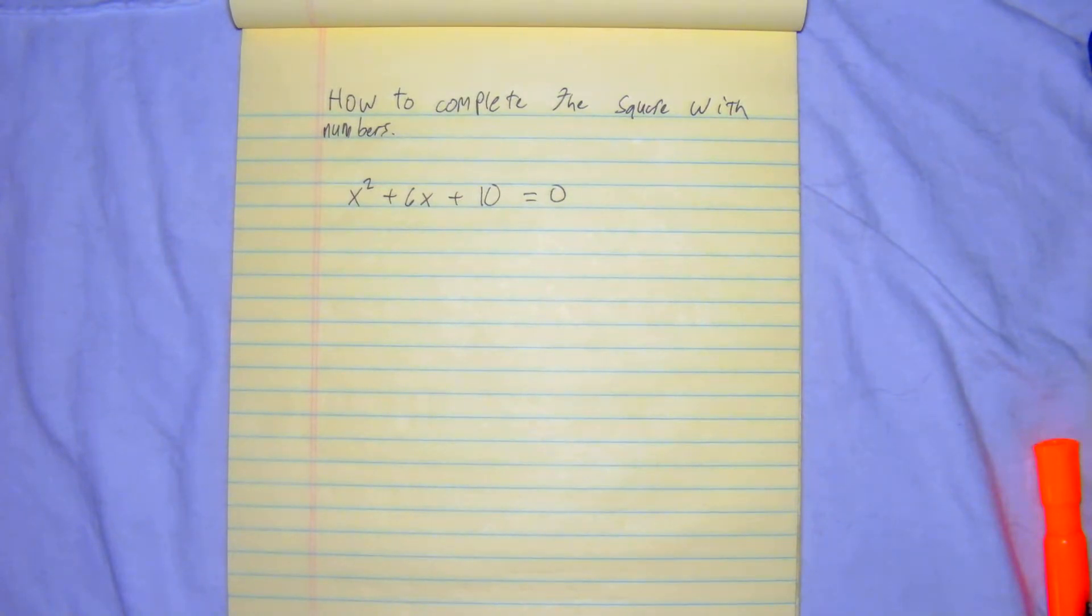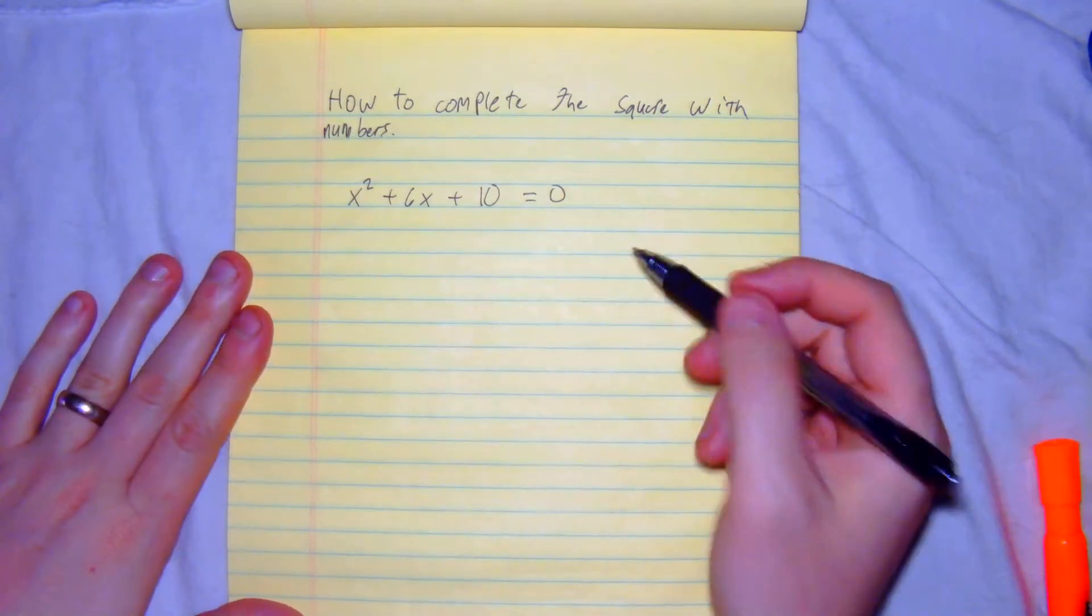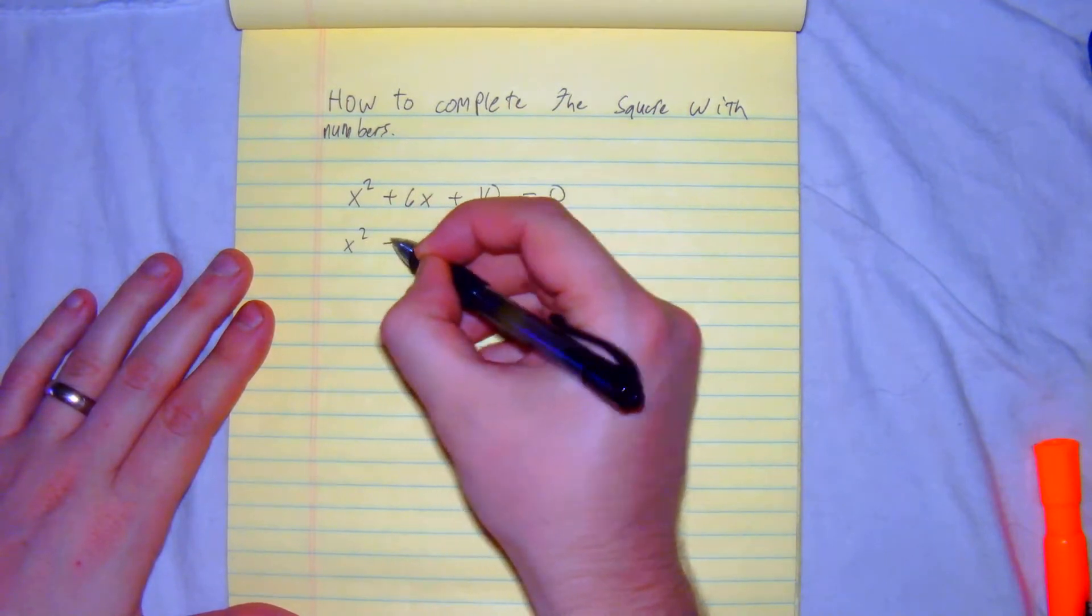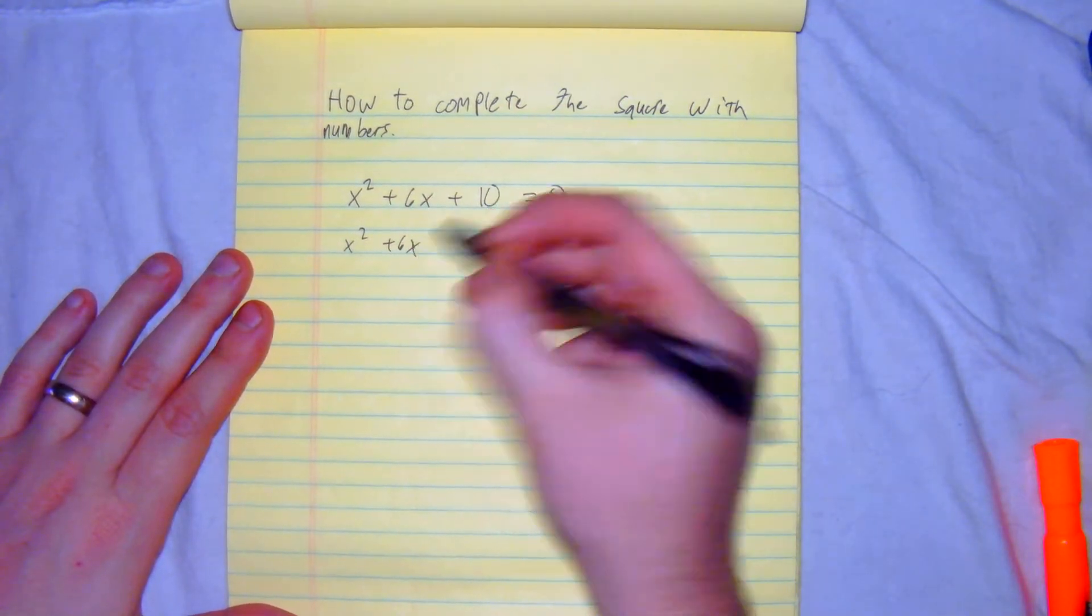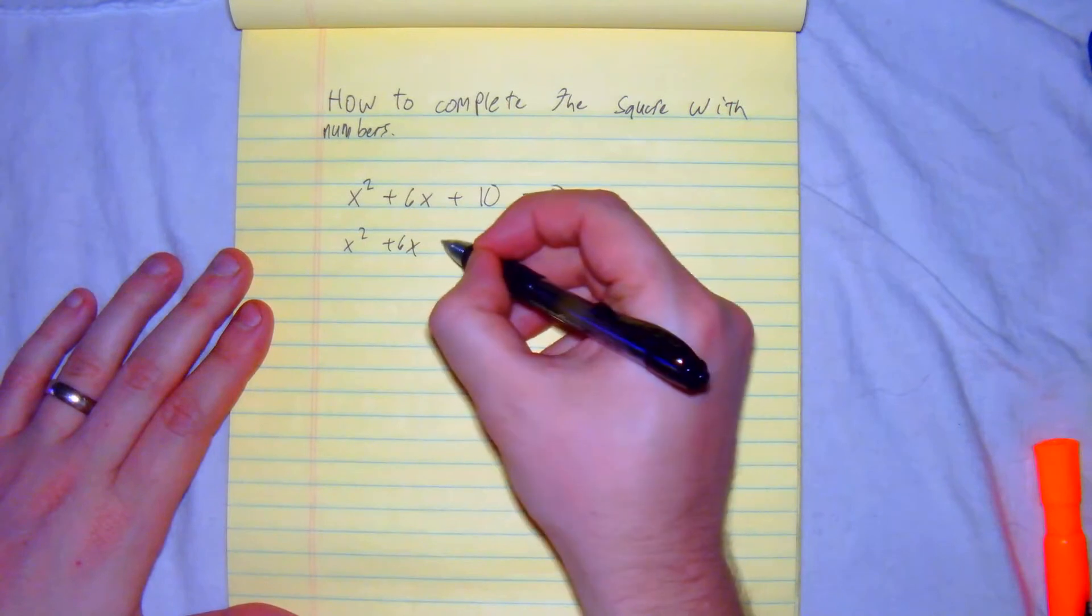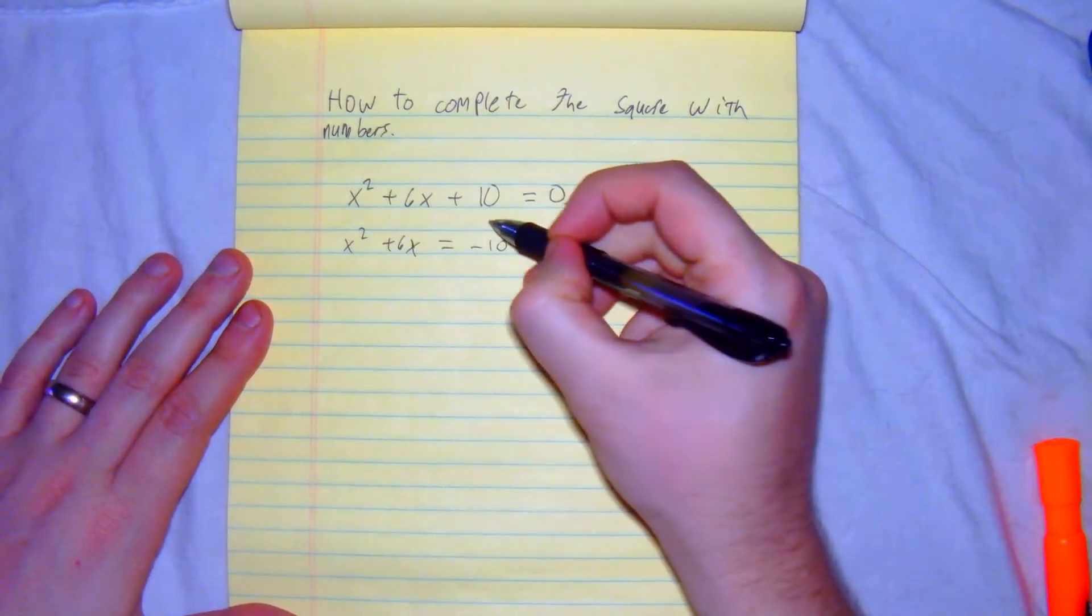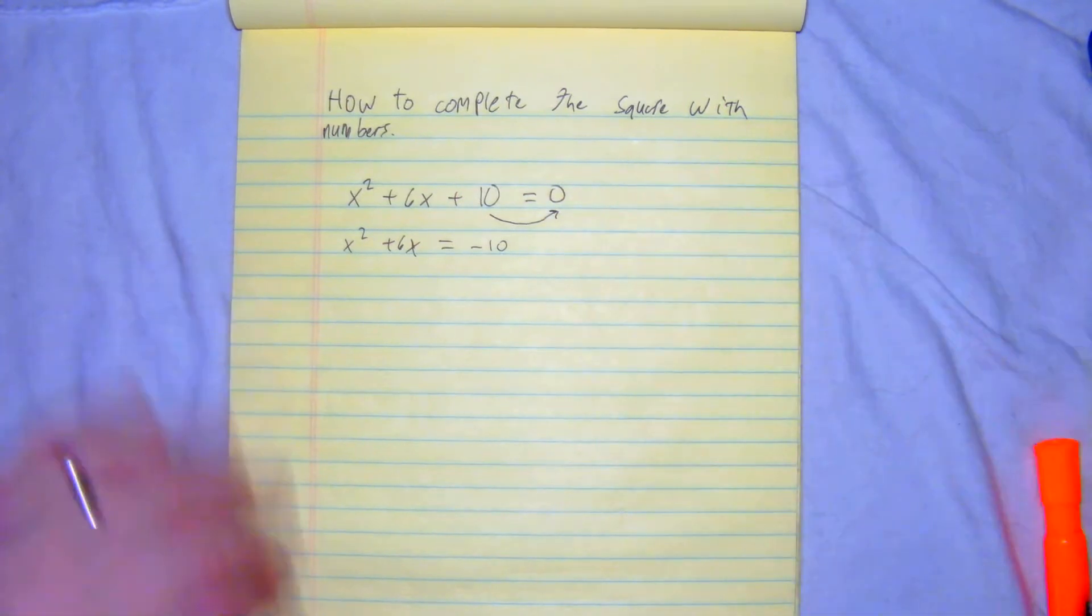So x squared plus 6x plus 10, we want to complete the square. So the first step, we're going to move it over. So now we have x squared plus 6x is equal to negative 10. The reason why we got negative 10 is we subtracted it to the other side.